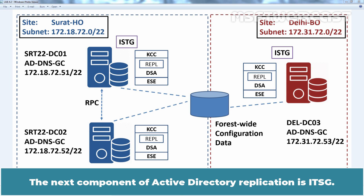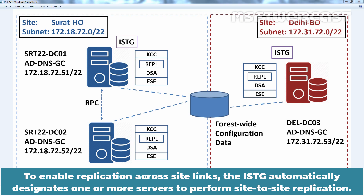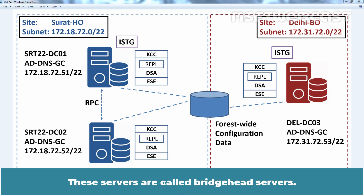The next component of Active Directory replication is ISTG. One domain controller in each site is selected as the Inter-Site Topology Generator, also known as ISTG. To enable replication across site links, the ISTG automatically designates one or more servers to perform site-to-site replication. These servers are called Bridgehead servers.